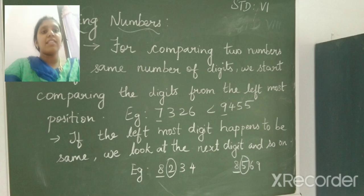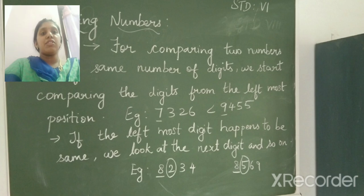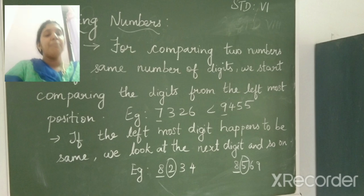7,326 and 9,455. On the left most position, it is 7 and 9. So 7 is less than 9. So 7,326 is less than 9,455.